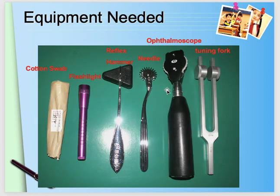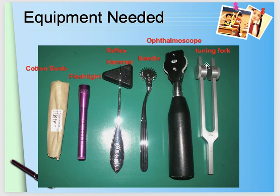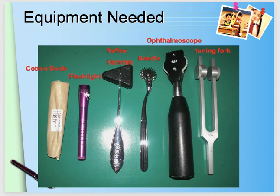The equipment needed for neurological examination includes: an ophthalmoscope to examine the retina, a tuning fork to check vibration sensation carried by the posterior columns, a needle, a reflex hammer to check reflexes, a flashlight to check pupillary reflexes, and a cotton swab to check light touch. The main point of neurological examination is to localize the anatomical site of the lesion — whether in the brain or spinal cord.